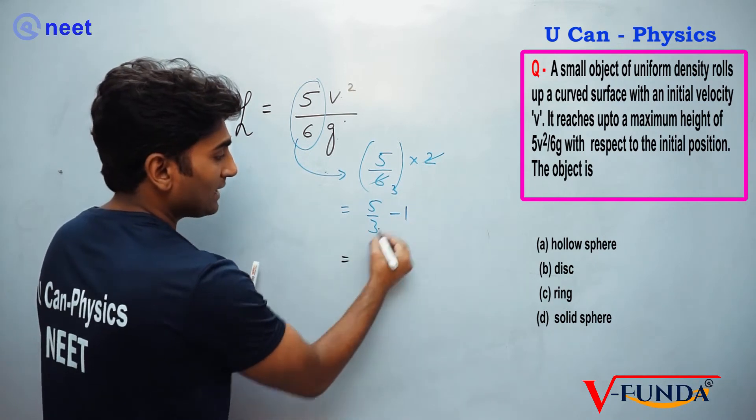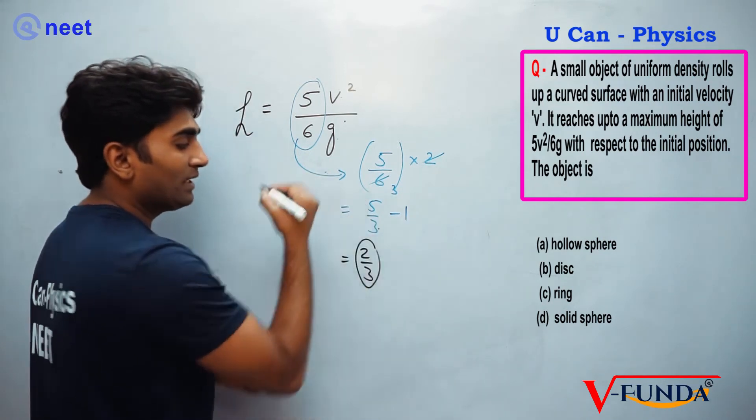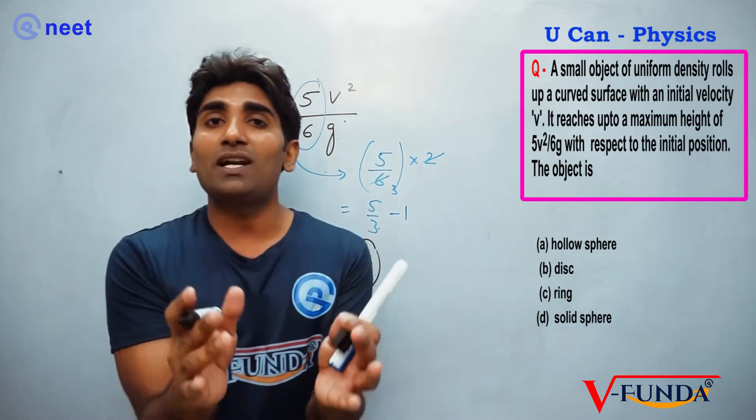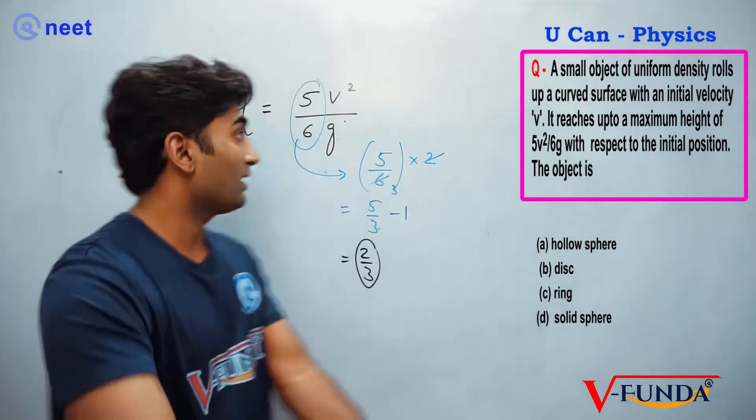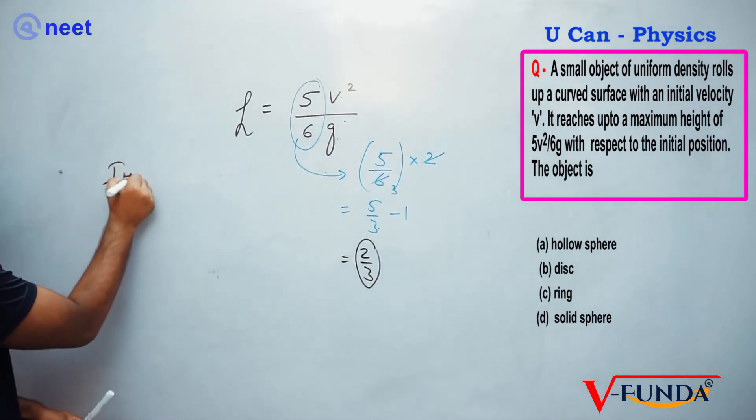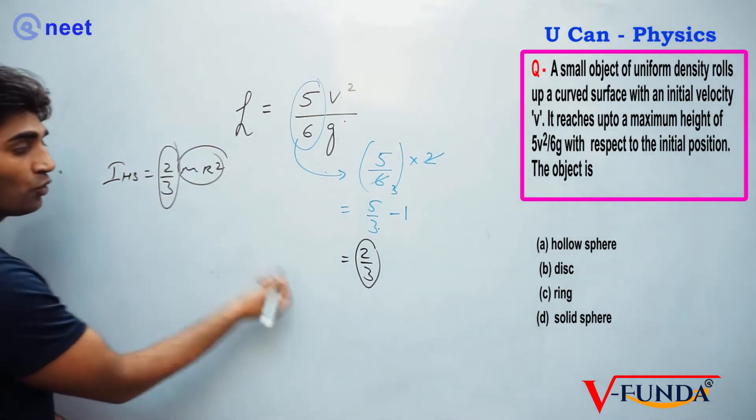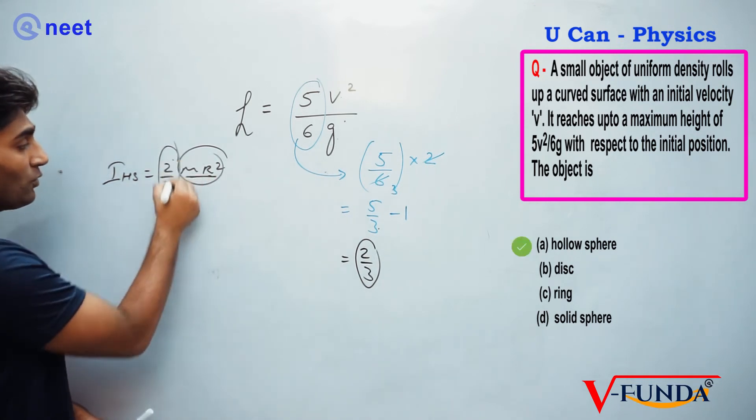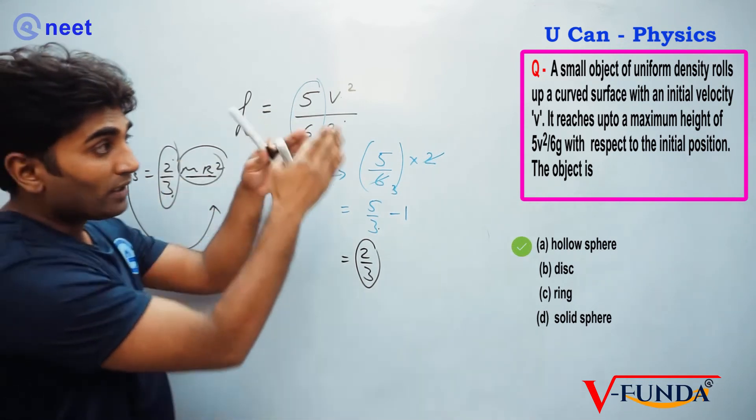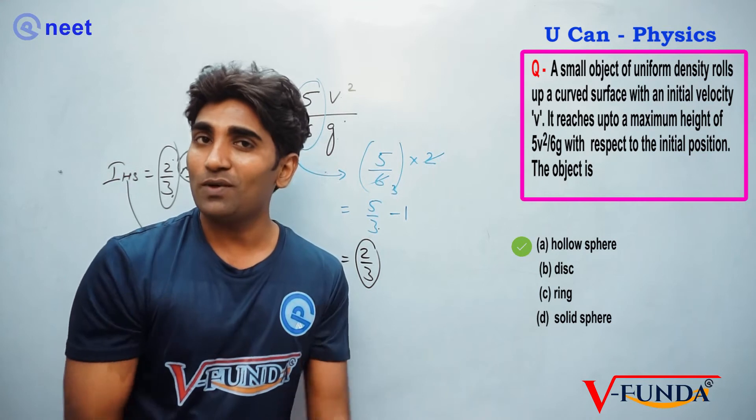The height coefficient gives MR² coefficient. Remember, 2/3 MR², that's 2/3. What is the name of the object? What is the object?